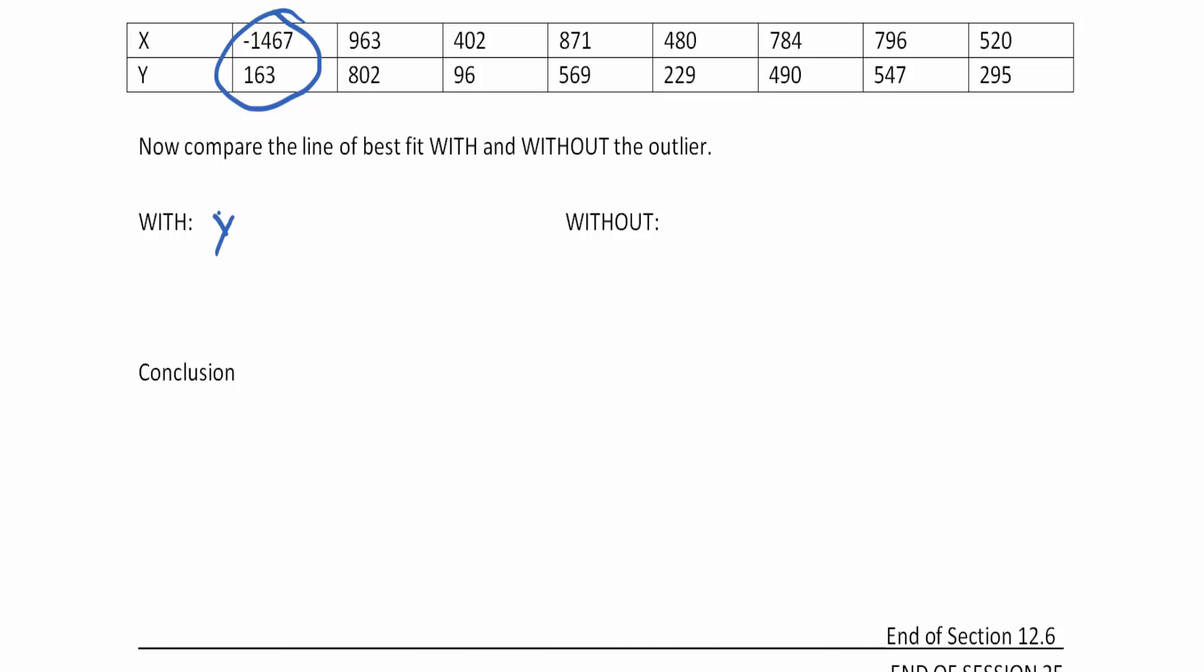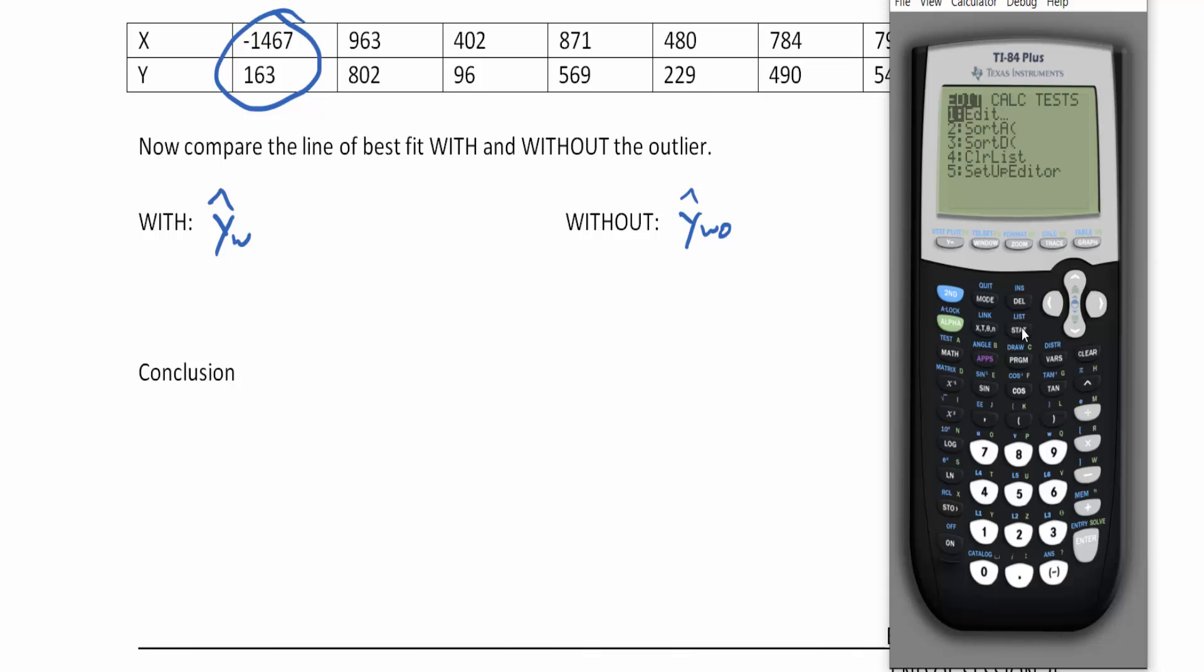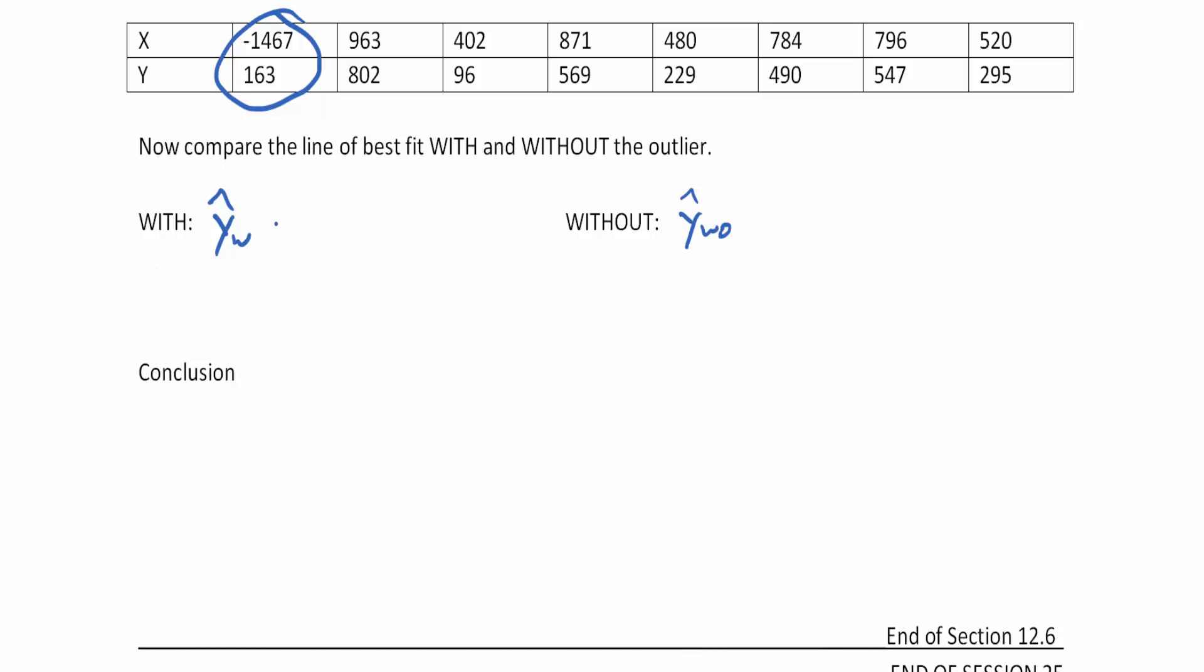So now I'm going to find my y hat with and compare that to y hat without the outlier. So the first thing I'm going to do is do it with since it's already there in my list 1 and list 2. I'm going to then go to stat and move over to tests and move up to the linear regression t-test. Scroll down to calculate. And now I see that my a value is 320.4 and my b value is 0.19. Let's write that down. So it looks like my y value is 320.4 plus my 0.19x.